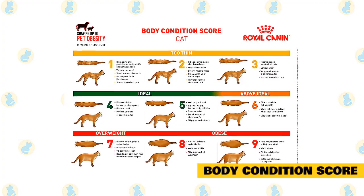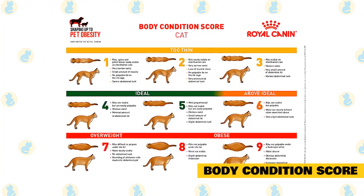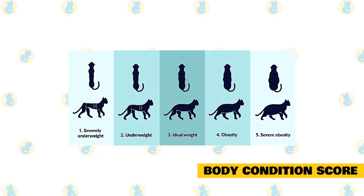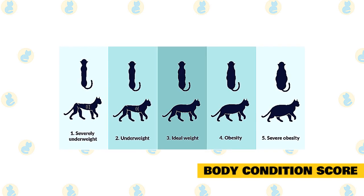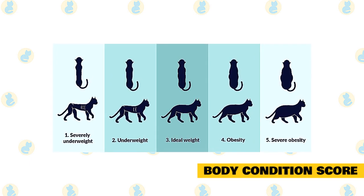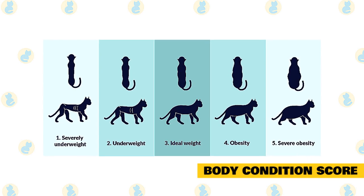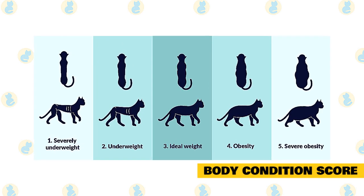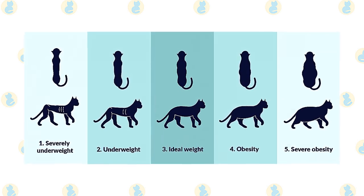For example, a very thin cat would have visible ribs, spine, and hip bones. A very obese cat scored 9 out of 9 would have a layer of fat over the ribs, fat deposits in front of the hips and near the neck, and a distended abdomen. A cat at an ideal body weight would have ribs that are easily felt without pushing through a layer of fat, an abdomen that is tucked up when viewed from the side, and a visible last rib.